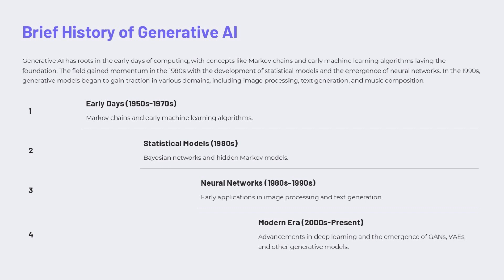The modern era, from the 2000s to the present day, has seen explosive progress, with the development of powerful techniques like GANs, VAEs, and other deep learning-based generative models. This rapid progress has truly transformed what's possible with generative AI, opening up exciting new frontiers and possibilities.